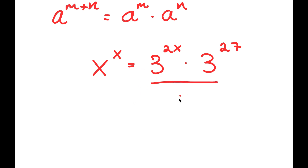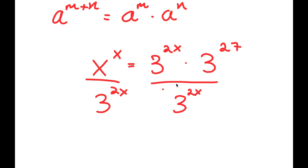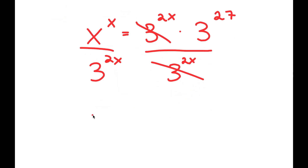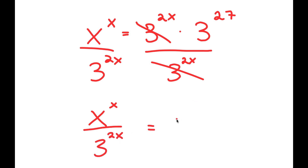Now I'm going to divide both sides by 3 to the power of 2x. These two cancel out, and I get x to the power of x over 3 to the power of 2x is equal to 3 to the power of 27.